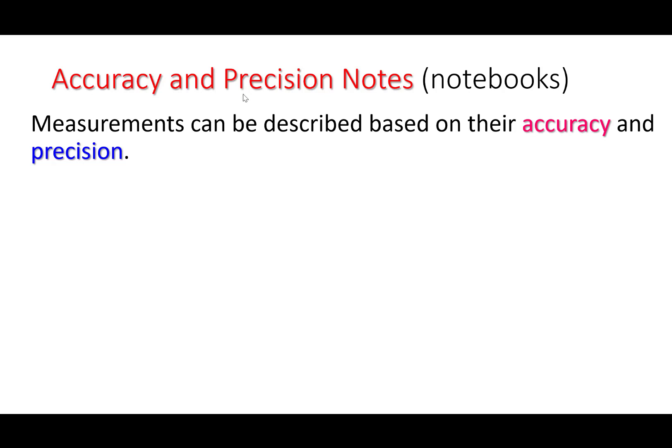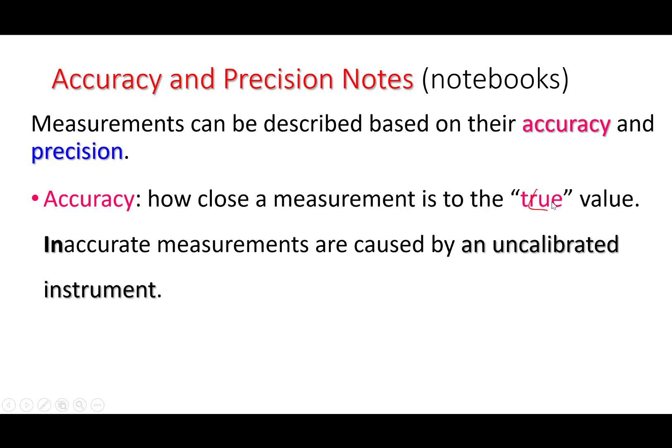We've already talked about significant digits and how they communicate precision, but we need to talk about what precision actually is. In science, we have two terms, accuracy and precision, that describe kind of how good our measurements are. Measurements can be described based on their accuracy and their precision.